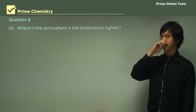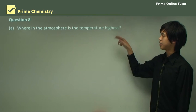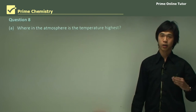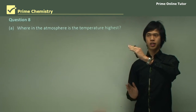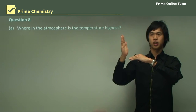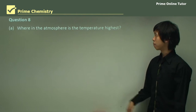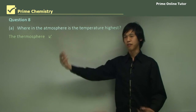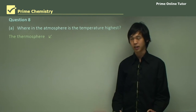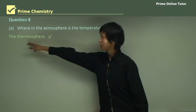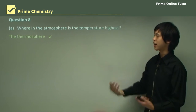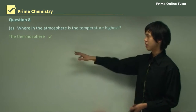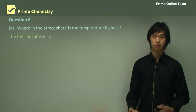Question eight asks: where in the atmosphere is the temperature highest? In the troposphere, temperature decreases as altitude increases, then there's a sudden abrupt jump in temperature at the stratosphere. But the highest temperature overall is in the thermosphere. A helpful memory trick: 'thermo' implies heat, so the thermosphere is associated with the highest temperature.